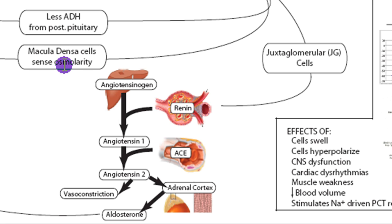The macula densa cells find less sodium in the filtrate at the distal convoluted tubule. They will interpret this to mean either a low GFR — where sodium had time to leak back into the peritubular capillaries — or there was less sodium in the diet to begin with. In either case, they're going to stimulate the JG cells. The macula densa cells sit right in the distal convoluted tubule between the afferent and efferent arterioles, right next to the JG cells, so they can easily stimulate them to release more renin.